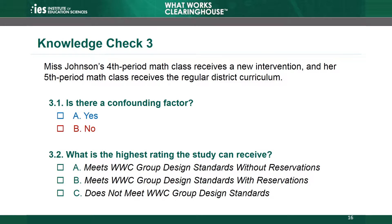What is the highest rating the study can receive? The correct answer is C — the highest rating the study can receive is 'does not meet WWC group design standards,' because we cannot attribute measures of the intervention's effectiveness solely to the intervention. Because the study has a confounding factor, it cannot receive any other rating. Any other design features that might affect the study rating, such as randomization or attrition, are irrelevant when a confounding factor is present.